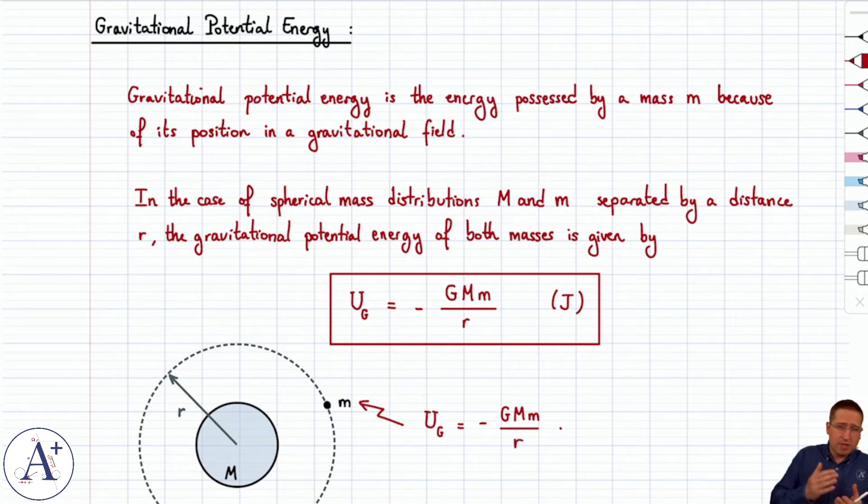But instead G big M little m over r. So it's still the case that it depends on its position relative to the surface of the earth or in fact relative to the center of the earth. So it is an energy due to position, that is what potential energy is. And it is the case that at a fixed distance r, it's constant, just like MGH is constant at a given height.